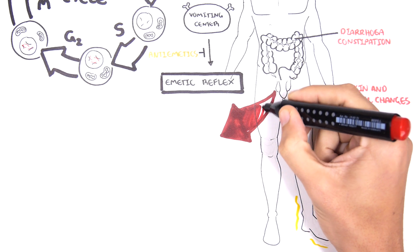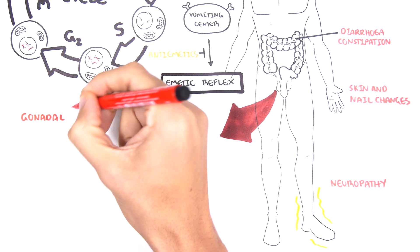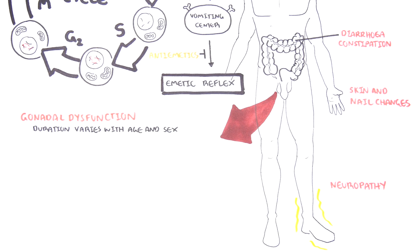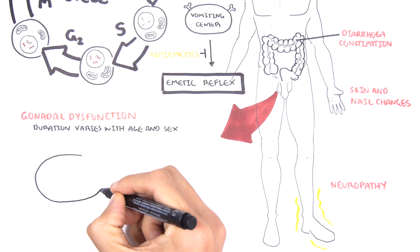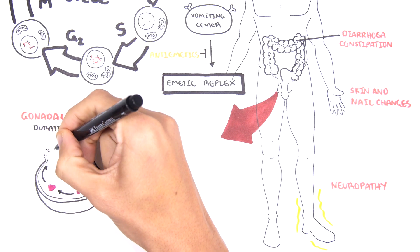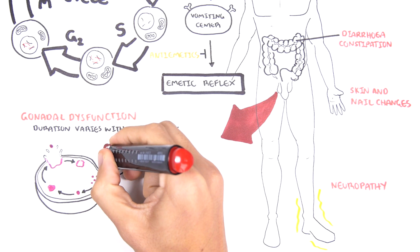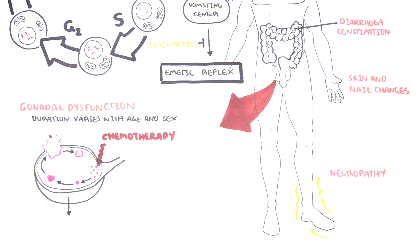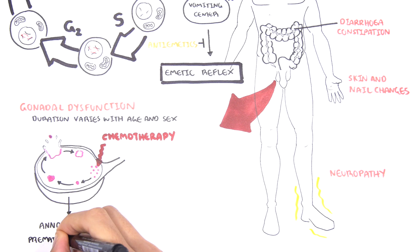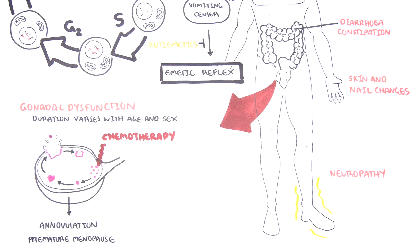Another important side effect, acutely but mainly long-term, is gonadal dysfunction — though this depends on the duration, age, and sex of the patient. In females, the ovary contains many follicles; each menstrual cycle a follicle grows and ruptures releasing an egg. Chemotherapy drugs can affect any part of this cycle, causing anovulation. Long-term, chemotherapy agents can affect the follicles themselves, causing premature menopause.